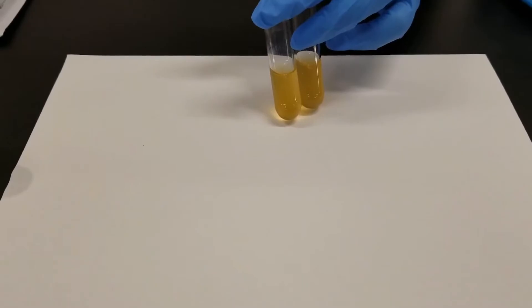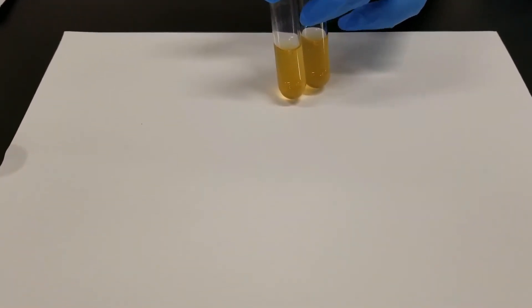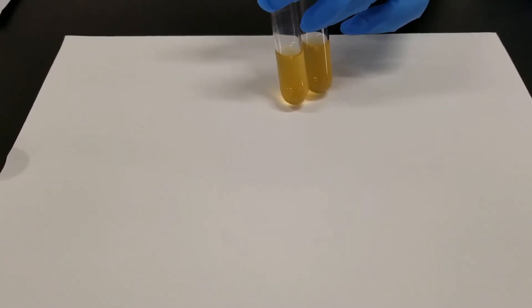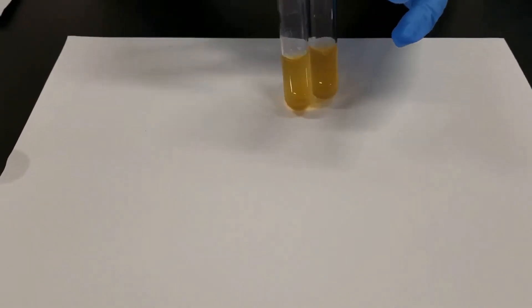This is part of the IMViC test, this is the methyl red test portion of it. This is testing for the ability of the bacteria to ferment glucose and produce large amounts of acid.